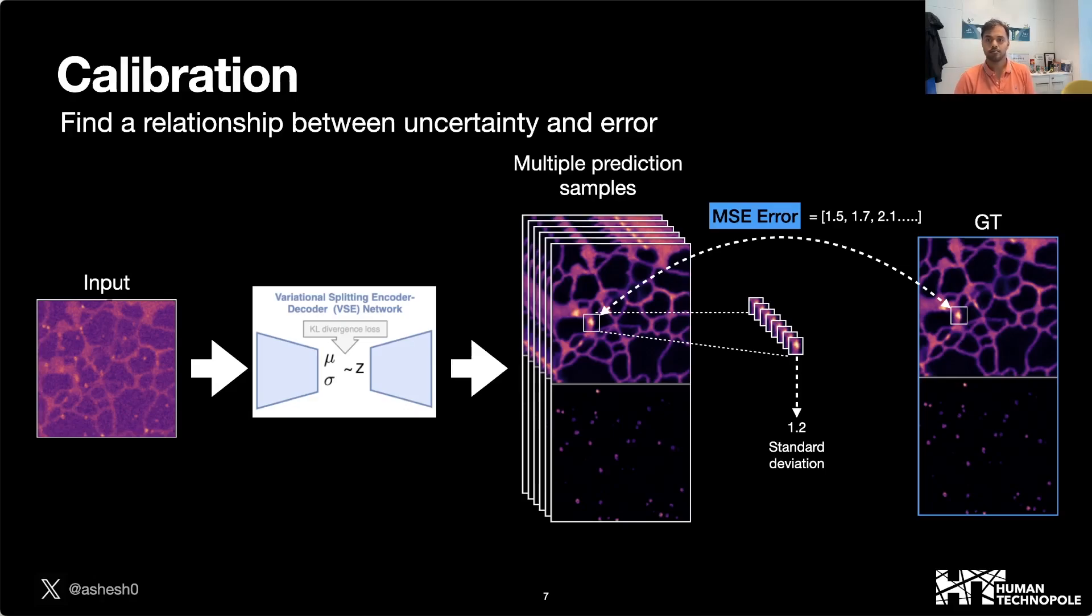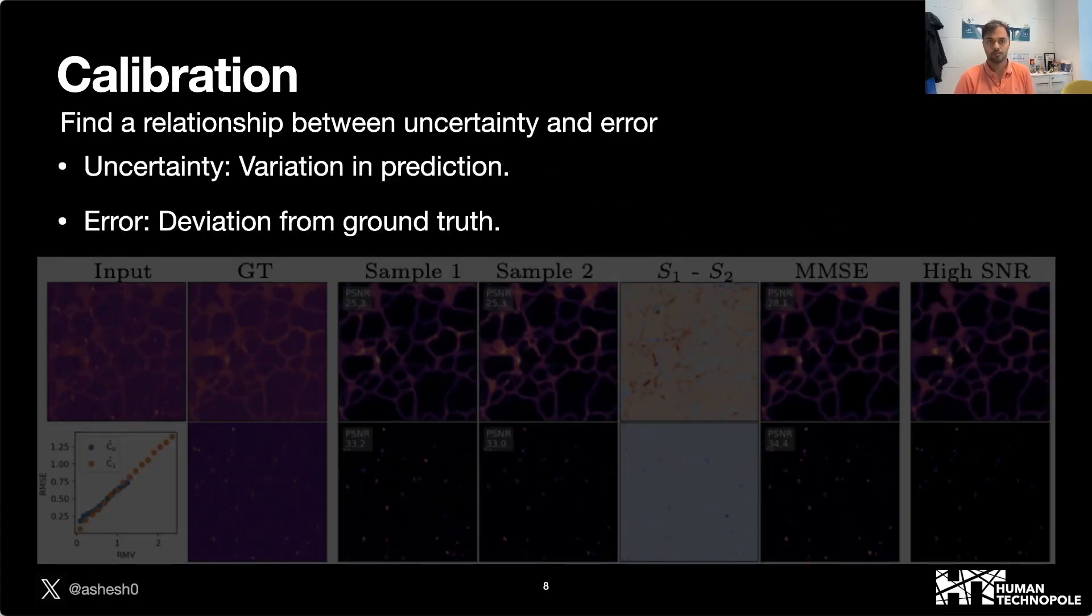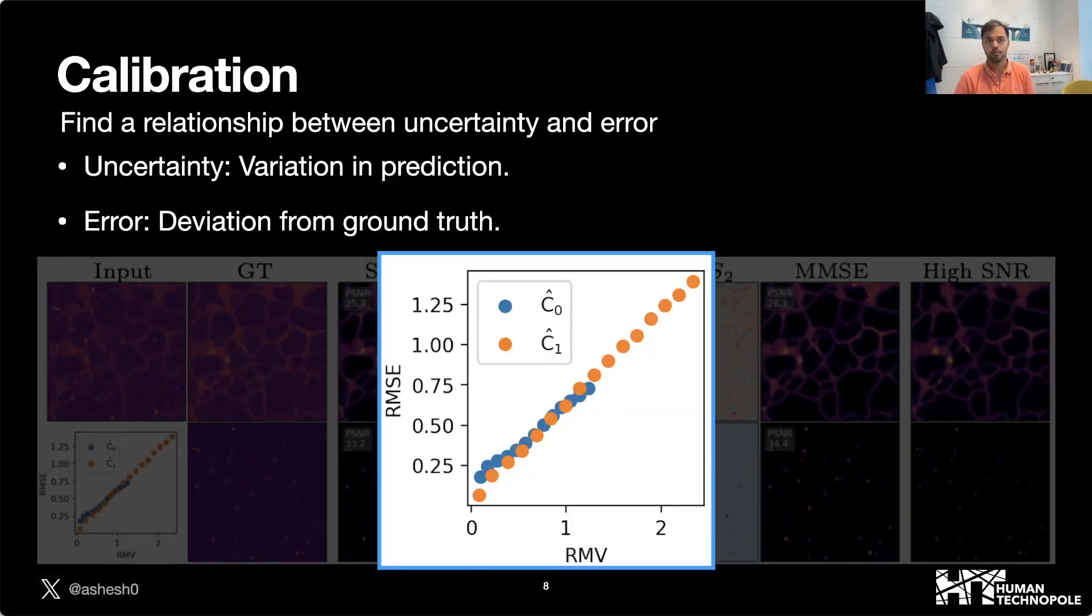We learn a scalar which we multiply with the standard deviation, and we plot the scaled uncertainty versus the MSE. We find that our network has this linear curve between the root mean variance and RMSE, which means that DenoiseSplit is calibrated for this dataset.